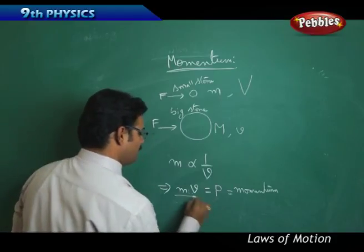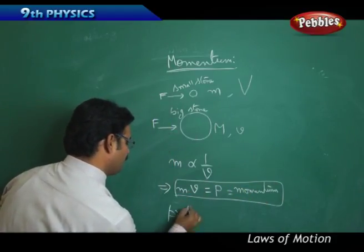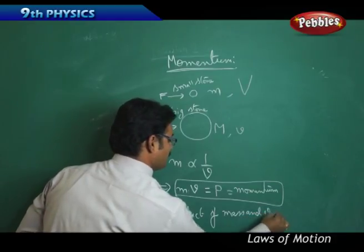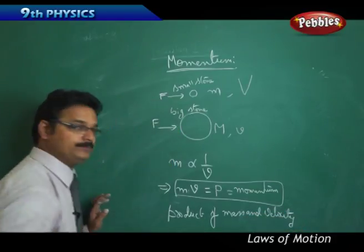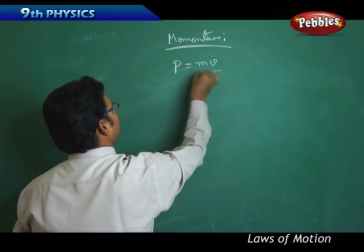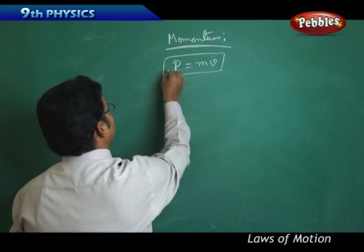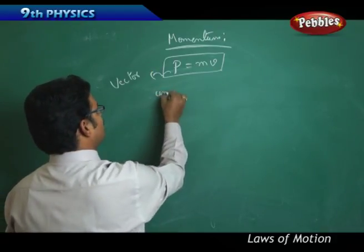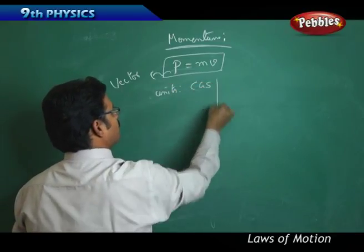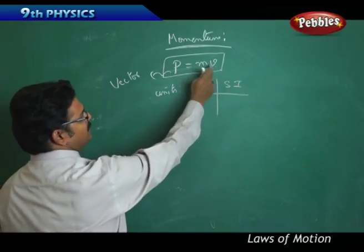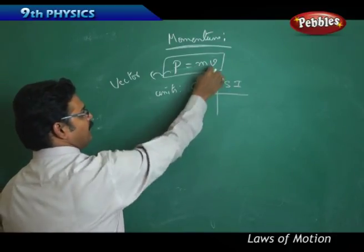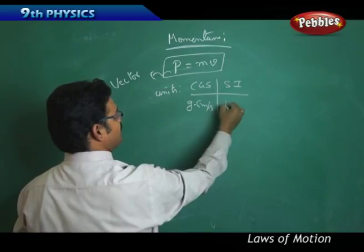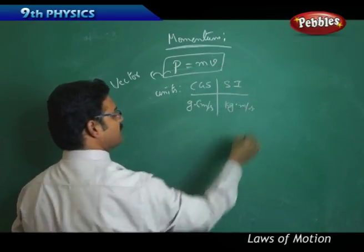Newton replaced the proportionality with a constant p, and this p is called momentum. Momentum is defined as the product of mass and velocity: p = m × v. This is an important formula. Momentum is a vector quantity — it has both magnitude and direction. In CGS units, momentum is measured in gram·centimeter per second, and in SI units it is kilogram·meter per second.